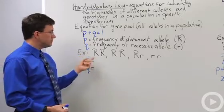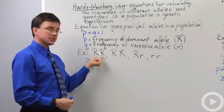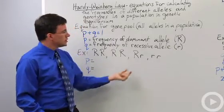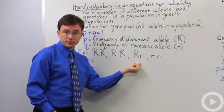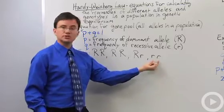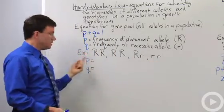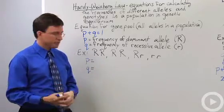So if our population consisted of somebody who's homozygous dominant, another person who's homozygous dominant, somebody who is heterozygous for the tongue rolling ability, and then somebody who's homozygous recessive, what is P and what is Q in my gene pool?